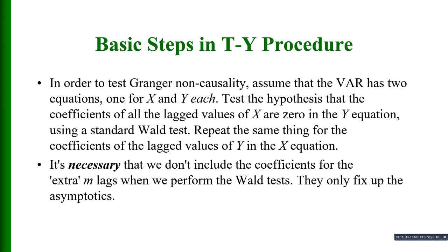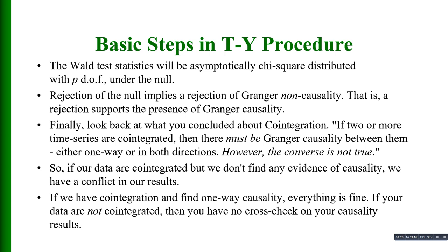The Wald test statistics will be asymptotically chi-square distributed with p degrees of freedom under the null hypothesis. If you reject the null hypothesis, it implies a rejection of Granger non-causality — meaning a rejection of the null hypothesis supports the presence of Granger causality.